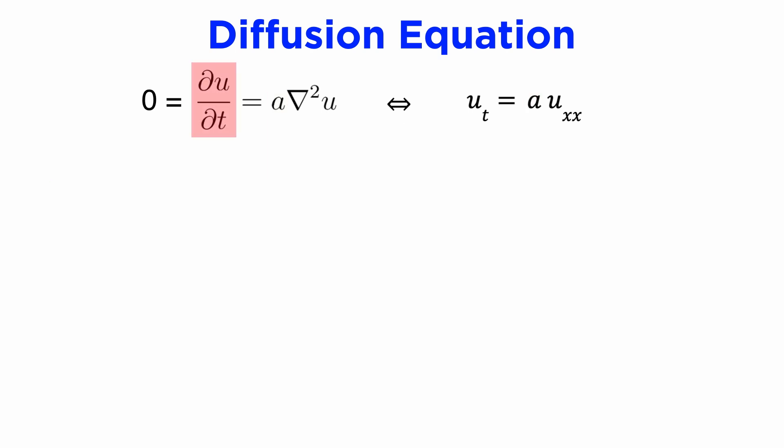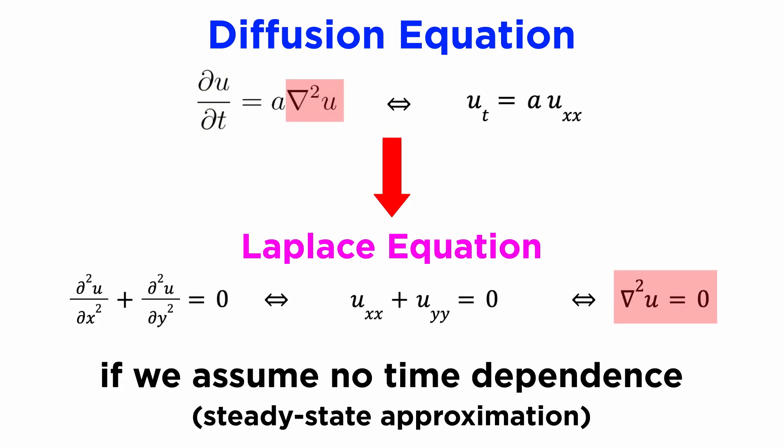We can also observe that if we assume that there is no time dependence to our solution, so that partial u partial t is zero, the diffusion equation simplifies to the Laplace equation, and so the Laplace equation can be considered the steady state approximation to the diffusion equation.